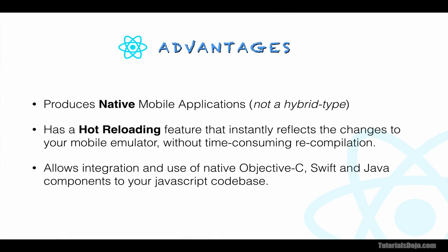React Native has three distinct advantages. First, it produces a true native mobile application and not just a hybrid type like the ones generated by Apache Cordova, Ionic, and other JavaScript-based mobile development frameworks. And since it's also using the same UI APIs — which is what native iOS and Android apps use — its performance is much faster than the others.